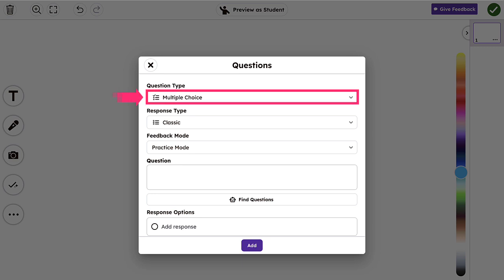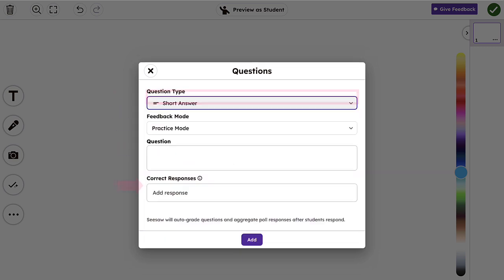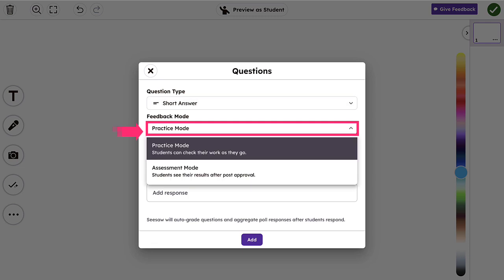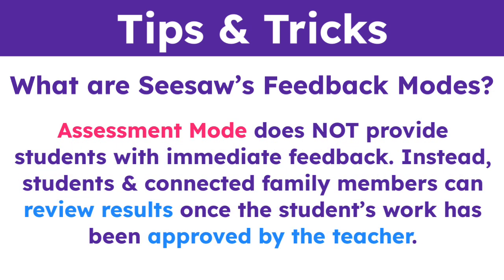Begin by selecting Short Answer from the Question Type drop-down. Next, select your preferred feedback mode: Practice Mode or Assessment Mode. Practice Mode allows students to check their work and receive feedback in real time, helping them validate that they're on the right track. Assessment Mode does not provide students with immediate feedback.